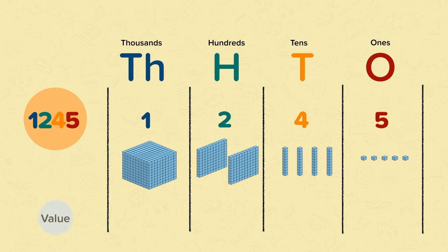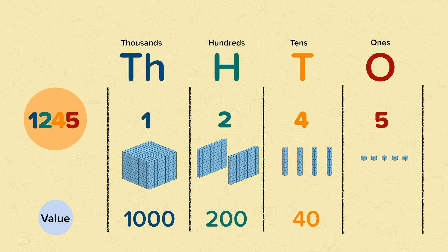Now let's have a look at the value of each digit in this number. The value of the one in the thousands place is one thousand. The value of the two in the hundreds place is two hundred. The value of the four in the tens place is forty. And the value of the five in the ones place is just five.